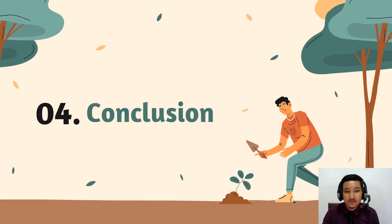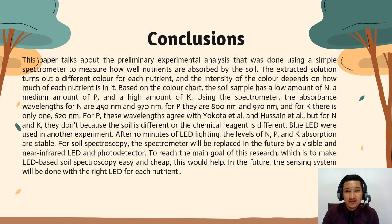For the conclusion: the paper discusses a preliminary experimental analysis done using a simple spectrometer to measure how well nutrients are absorbed by the soil. The extract solution turns out to be a different color for each nutrient, and the intensity of the color depends on how much of each nutrient is present. Based on the color chart, the soil sample has a low amount of N, a medium amount of P, and a high amount of K.